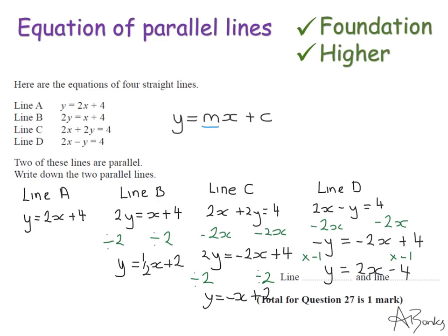Then the two lines that are parallel are the ones with the same gradient. So it's line A because that has a gradient of 2, and line D because that also has a gradient of 2.